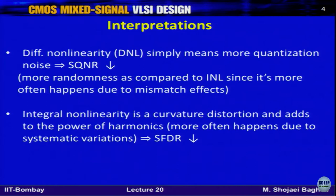What about integral non-linearity (INL)? INL is usually produced because of systematic variations, not random mismatches. These systematic variations result in a curved static characteristic of the ADC rather than a simple linear one. This creates distortion, which is why harmonics start increasing. In the case of INL, odd harmonics start increasing, causing spurious-free dynamic range to drop and more distortion to appear in the frequency domain spectrum.